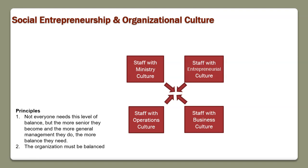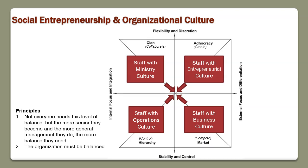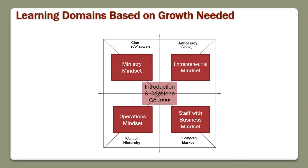As a leader, not everyone in your organization is going to need to have balance, but as you move up you're going to need to have more balance. The more you move into general management, the more you're going to be able to operate in all four quadrants. The other principle is the organization needs to be balanced in line with its mission. The four areas in the competing values framework are called clan, adhocracy, hierarchy, and market.